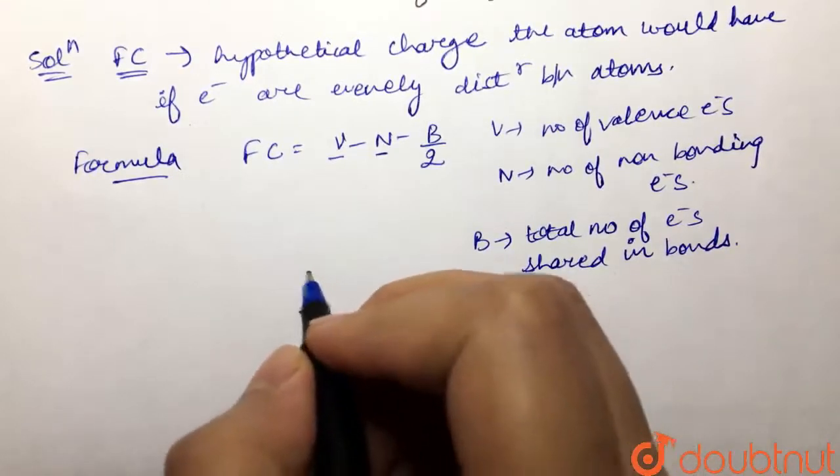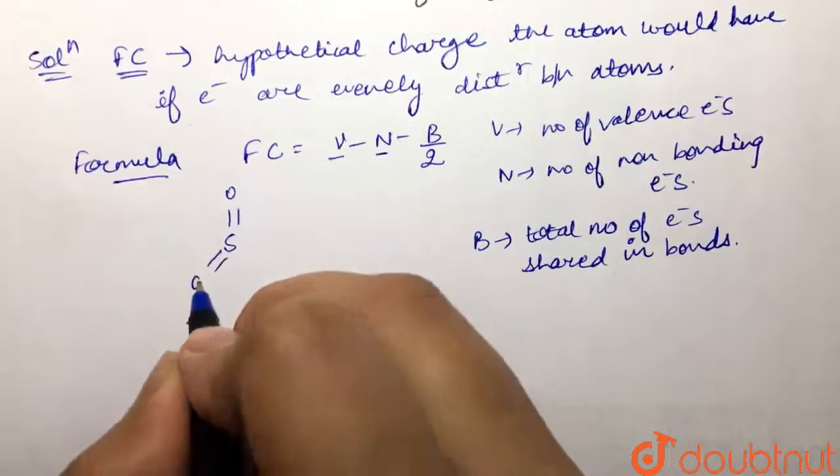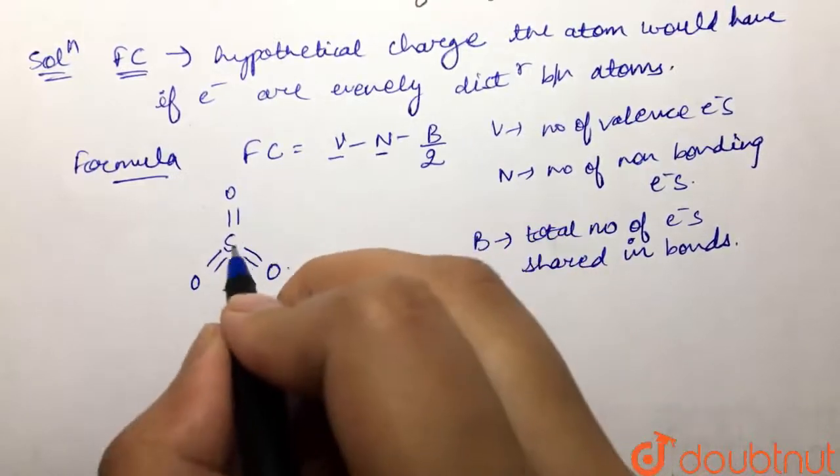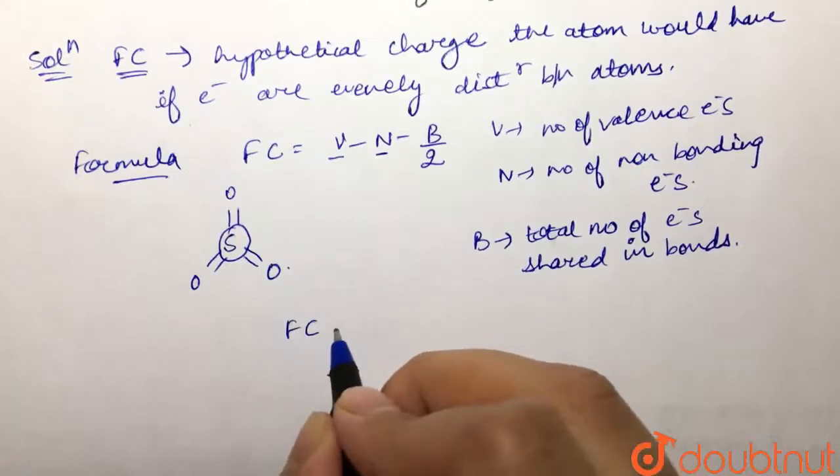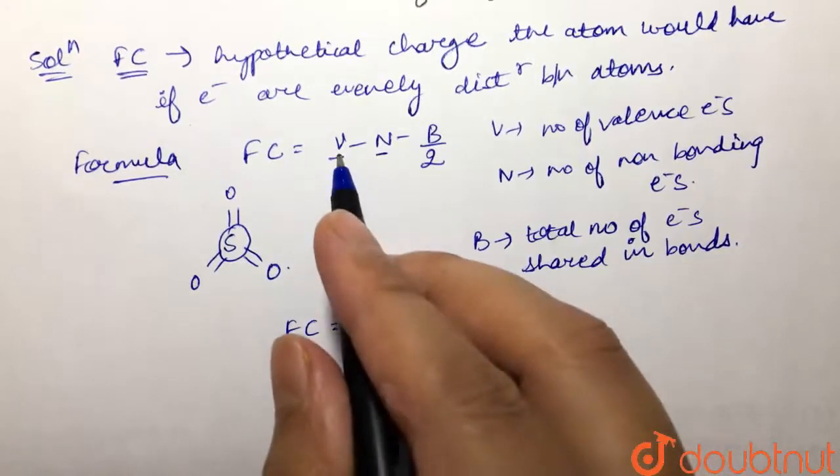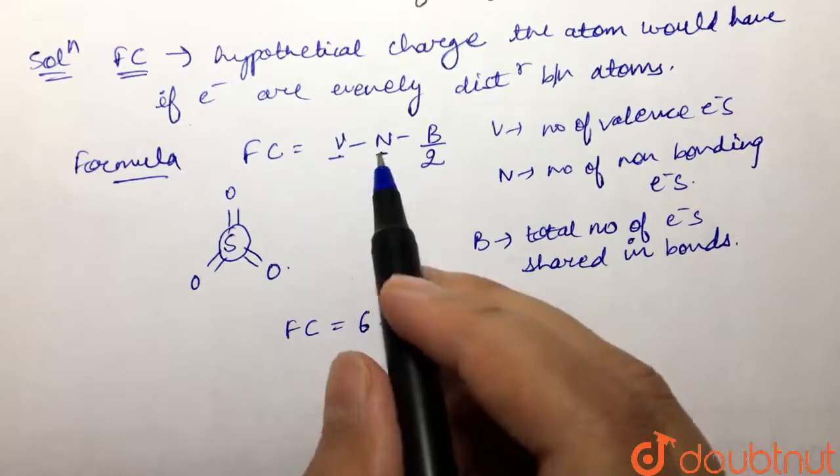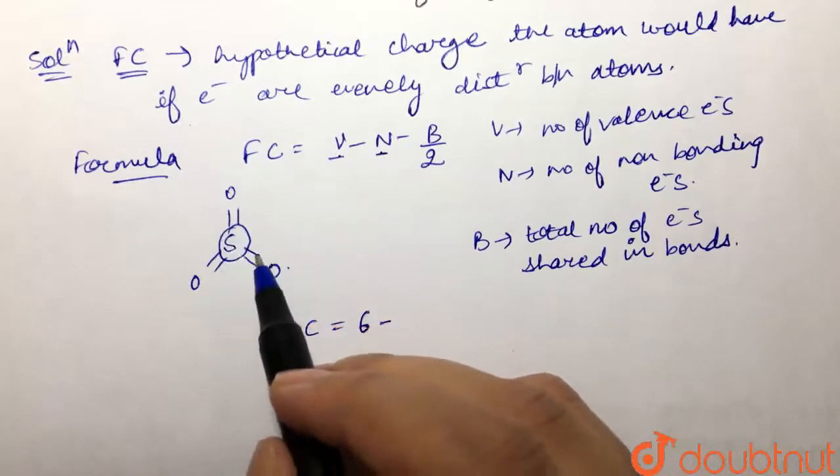So let's calculate the formal charge on sulfur using this structure. Formal charge equals the number of valence electrons in sulfur, which is 6, minus non-bonding electrons. We don't have any non-bonding electrons here, so that's 0, then minus the total number of electrons shared in the